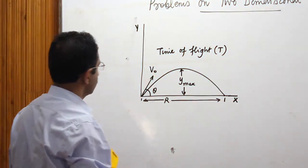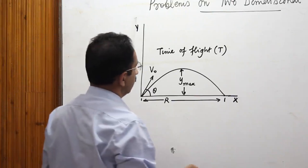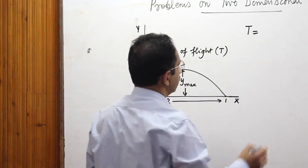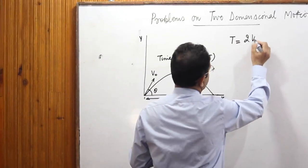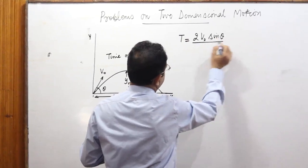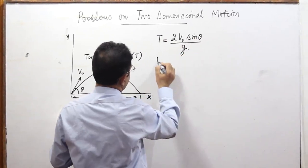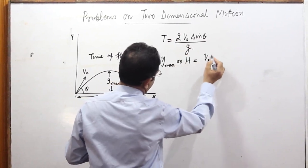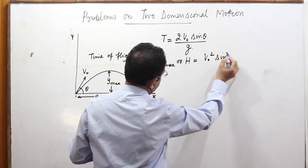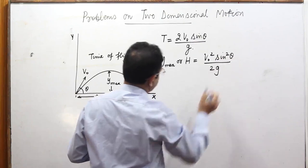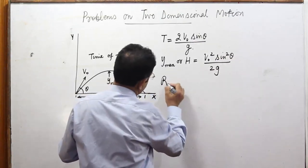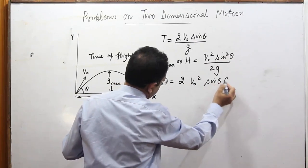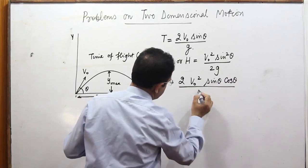The expressions for these three quantities — range, Y maximum, and time of flight — are: time of flight T equals 2 V0 sin theta divided by G; Y maximum (height) equals V0 squared sin squared theta divided by 2G; and range equals 2 V0 squared sin theta cos theta divided by G.